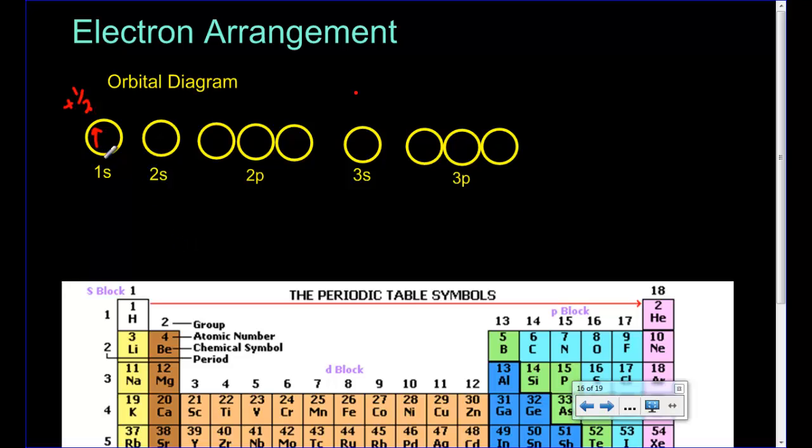When we look at helium, helium would have two electrons. And so we have one up one down. You have to fill the energy level before you move on. So right now we have helium filled up.